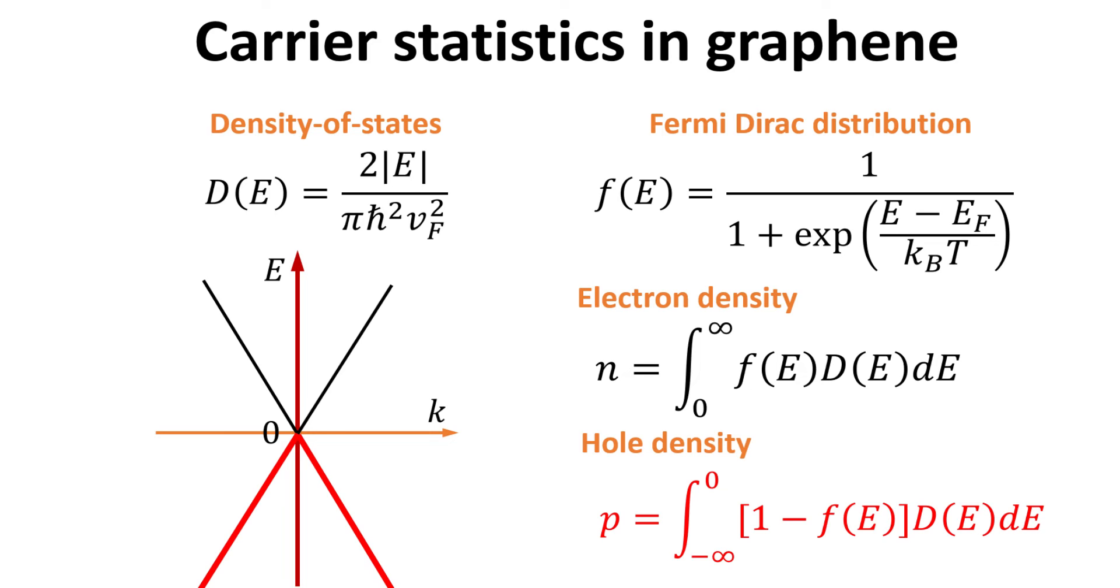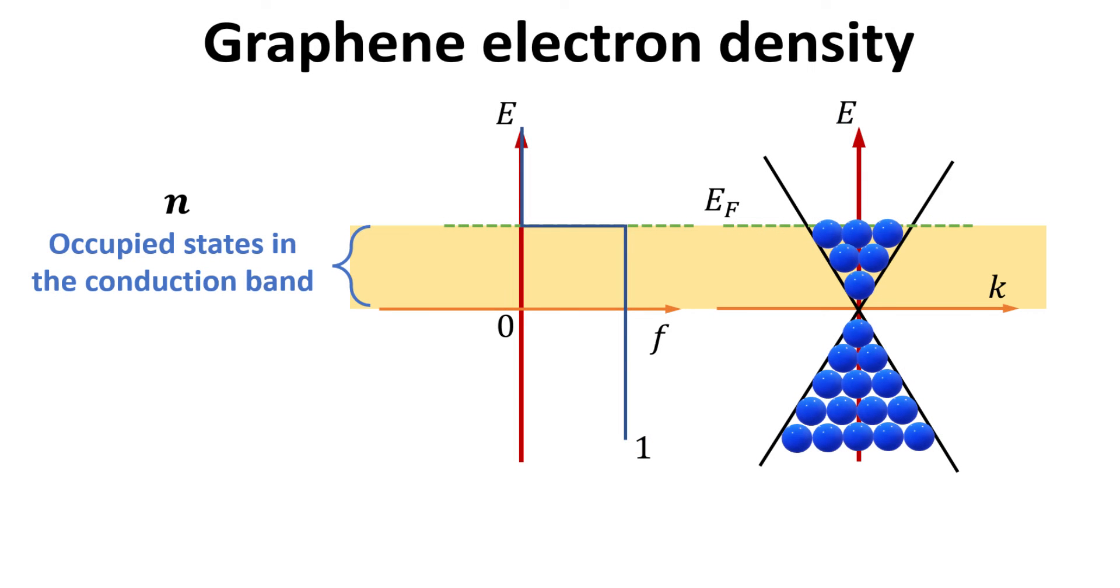The calculations of N and P can be performed numerically. When counting the electron density, N, we count the number of occupied states in the conduction band only.